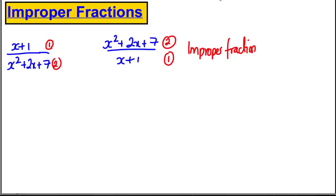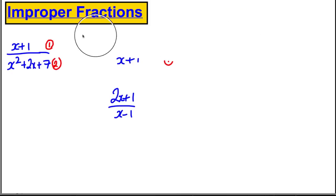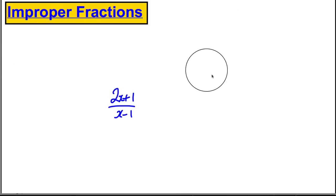Similarly, if the degrees are the same, it's still called an improper fraction. Something like (2x + 1) over (x − 1): although they both have order 1, that is also called improper. So that's what improper algebraic fractions are.